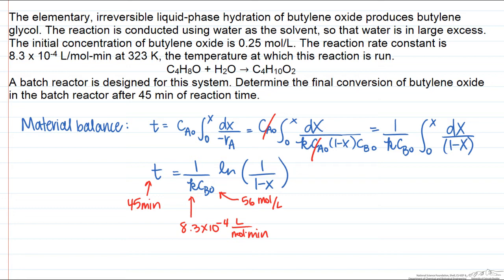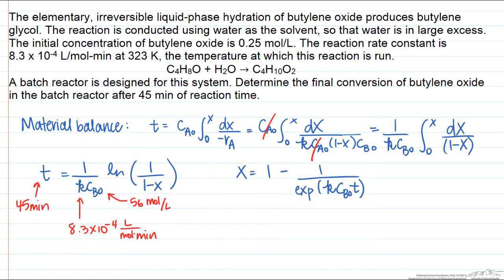We can plug in the values for k, plug in the value for CB0, and then we can solve for x. The value of x is equal to 0.87.